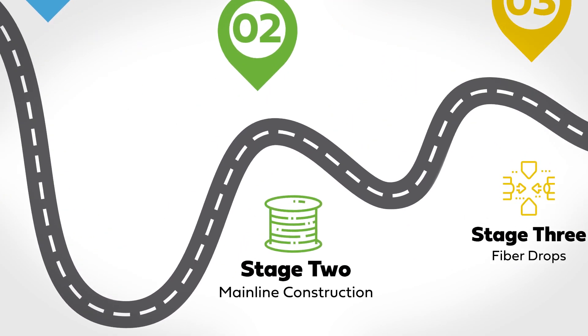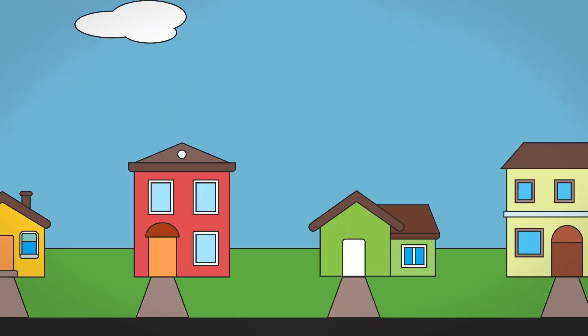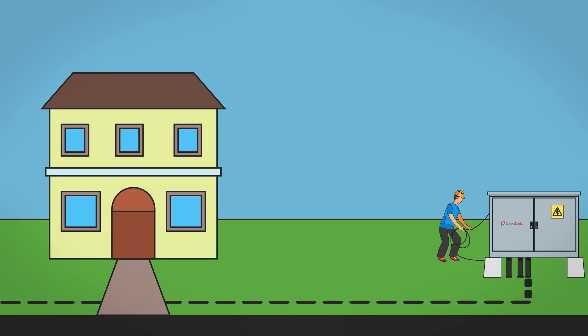Stage two is mainline construction. It takes one to two months to bury fiber optic cables along public rights-of-way, like streets and sidewalks.